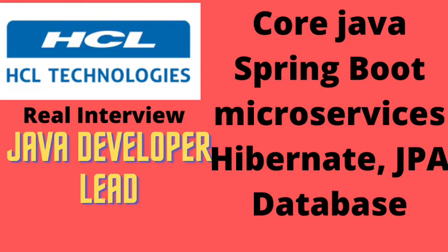In serialization, if I do not want to serialize some of the fields, what can we do to restrict that? We use the keyword transient for that particular field, so that field won't get serialized.